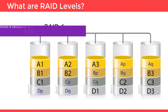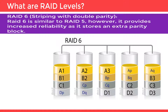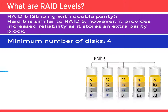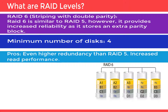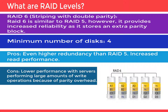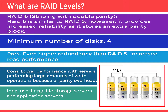RAID 6, Striping with Double Parity: RAID 6 is similar to RAID 5; however, it provides increased reliability as it stores an extra parity block. Minimum number of disks required is four. Pros: even higher redundancy than RAID 5 and increased read performance. Cons: lower performance with servers performing large amounts of RAID operations because of parity overhead. Ideal use: large file storage servers and application servers. An image shows how RAID 6 is configured.